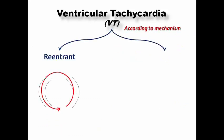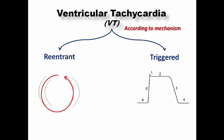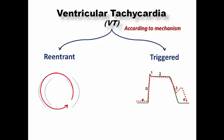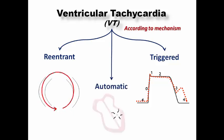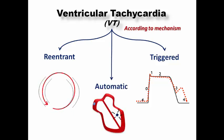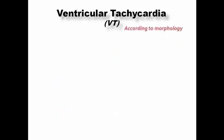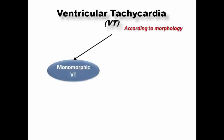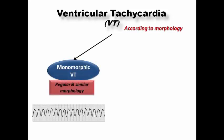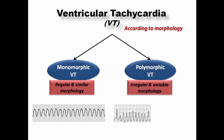We can classify ventricular tachycardia according to mechanism into re-entrant circuits, triggered activity which can include early after-depolarization or delayed after-depolarization, or abnormal automaticity due to an abnormally automatic focus in the ventricular muscle fibers. We can also classify it according to complex morphology: monomorphic VT showing regular and similar complex morphology, or polymorphic VT in which there is irregular and variable complex morphology.